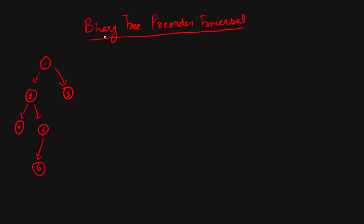Hello everyone, today we are going to solve binary tree pre-order traversal. Let's understand what pre-order traversal means. First of all, we have to print our root, then we have to print its left subtree, and then we have to print its right subtree.